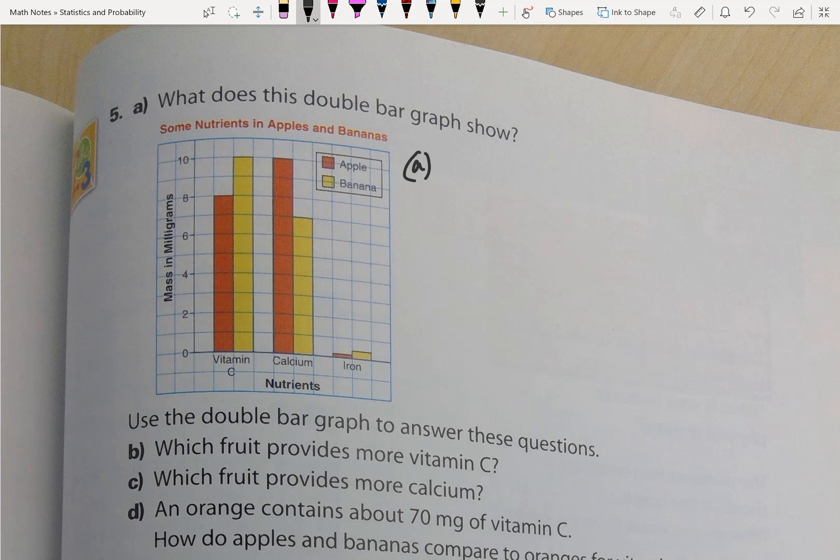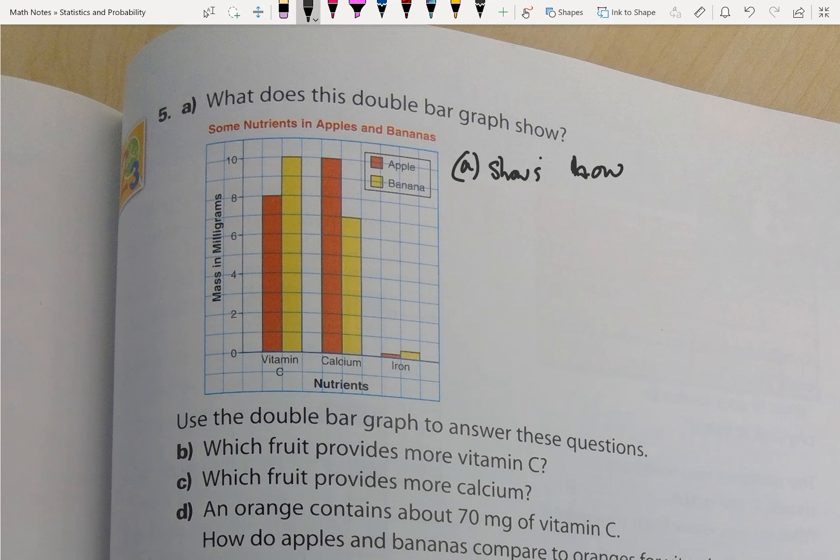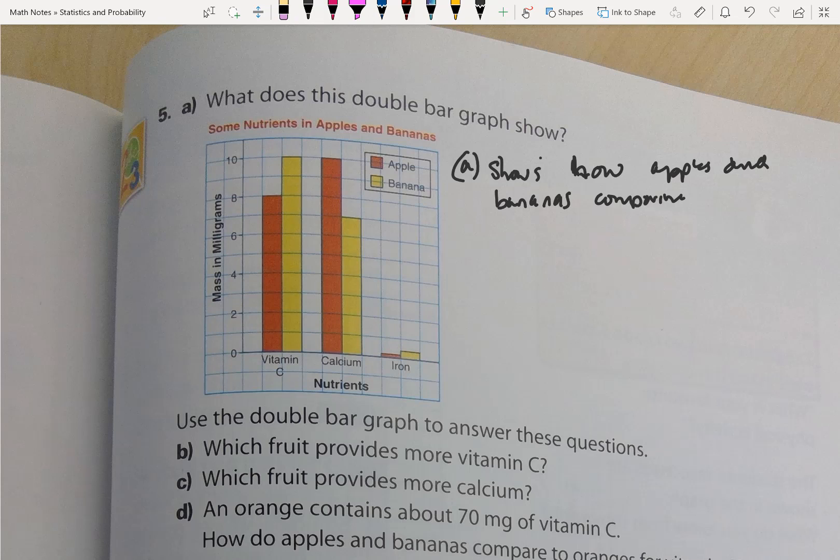So this graph shows how apples and bananas compare in vitamin C, calcium, and iron content.